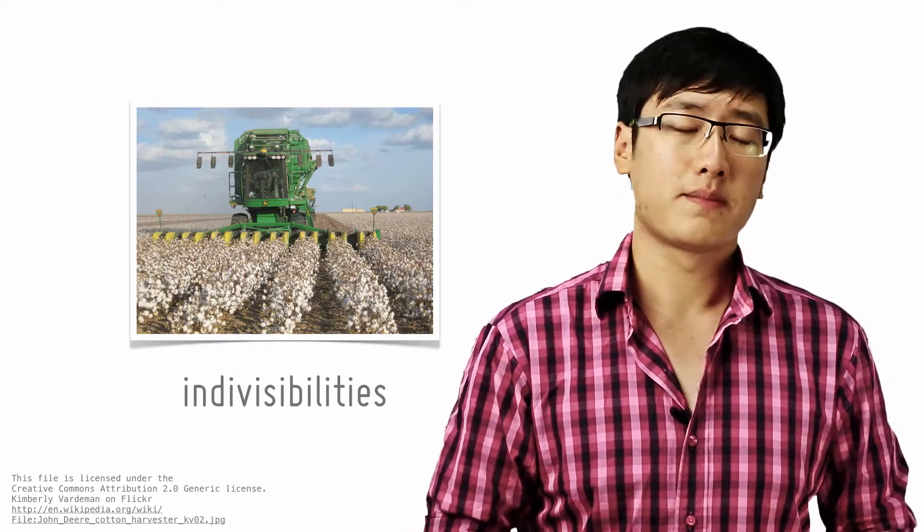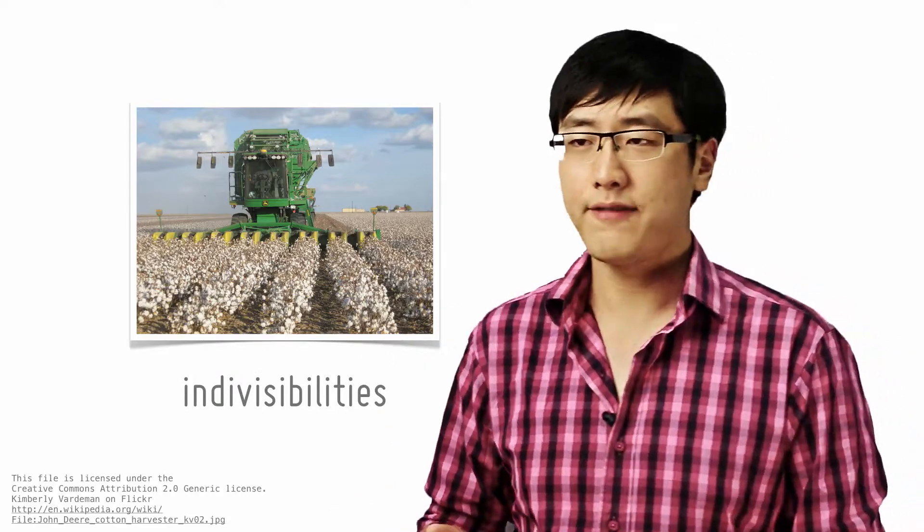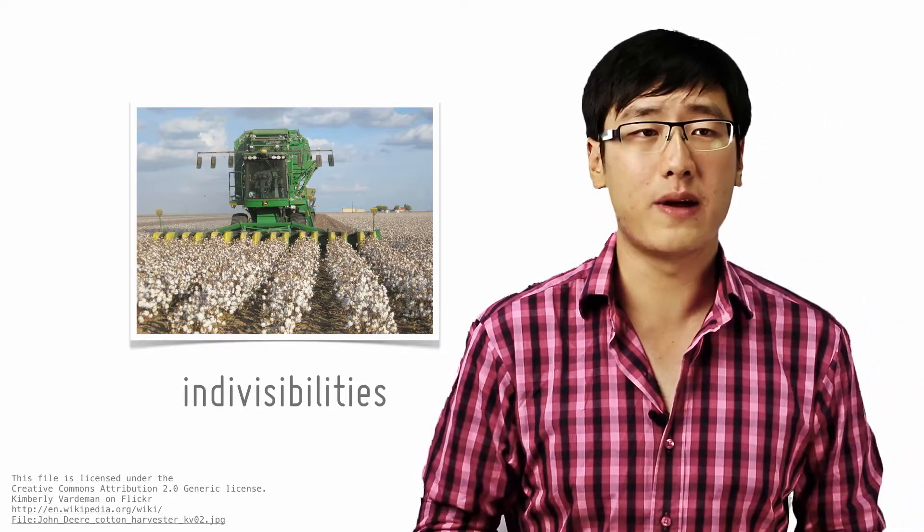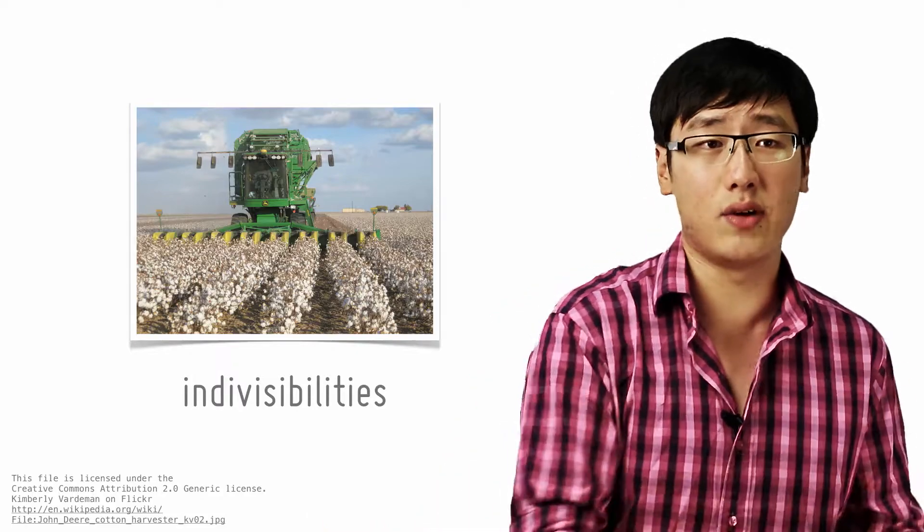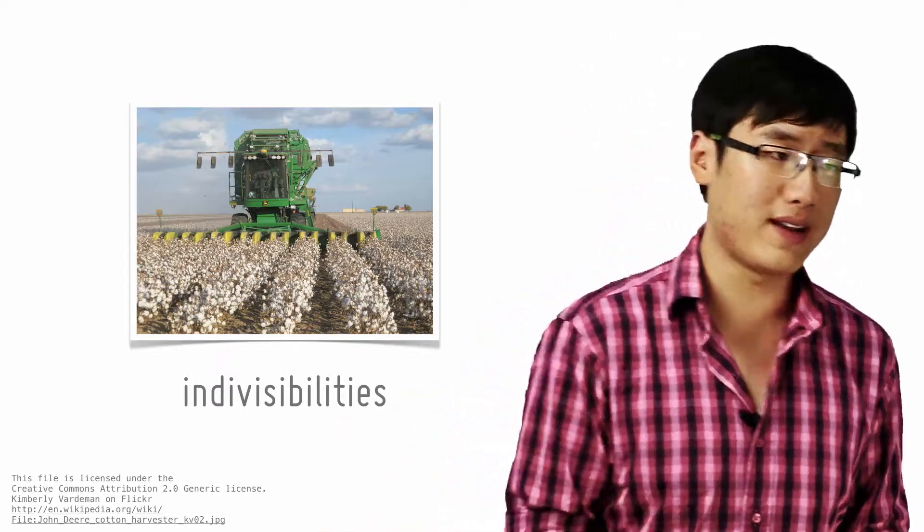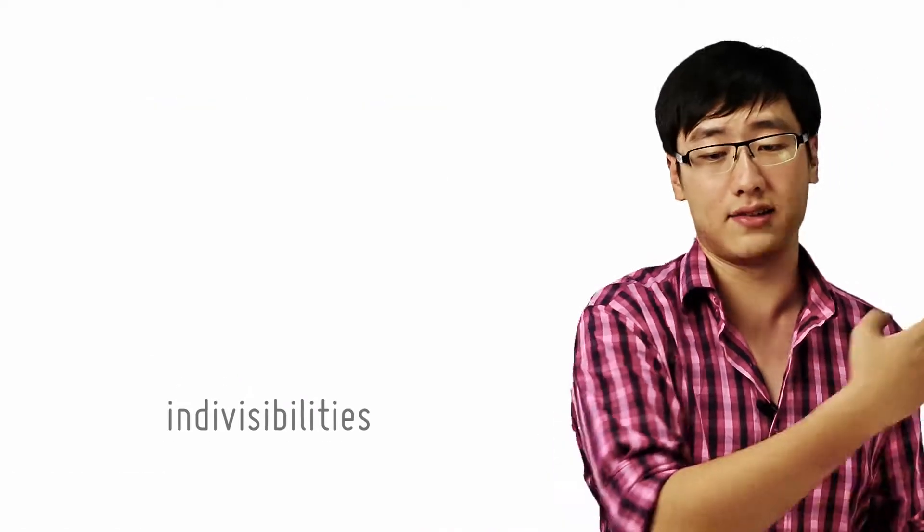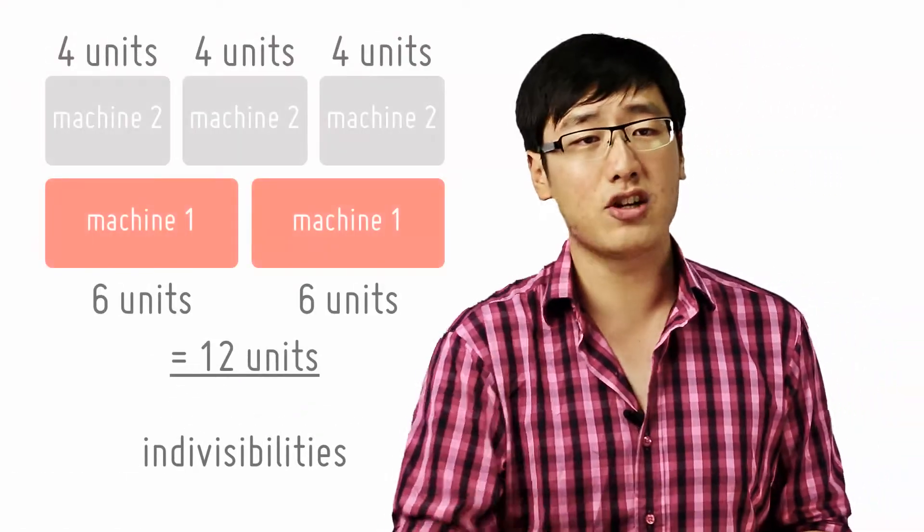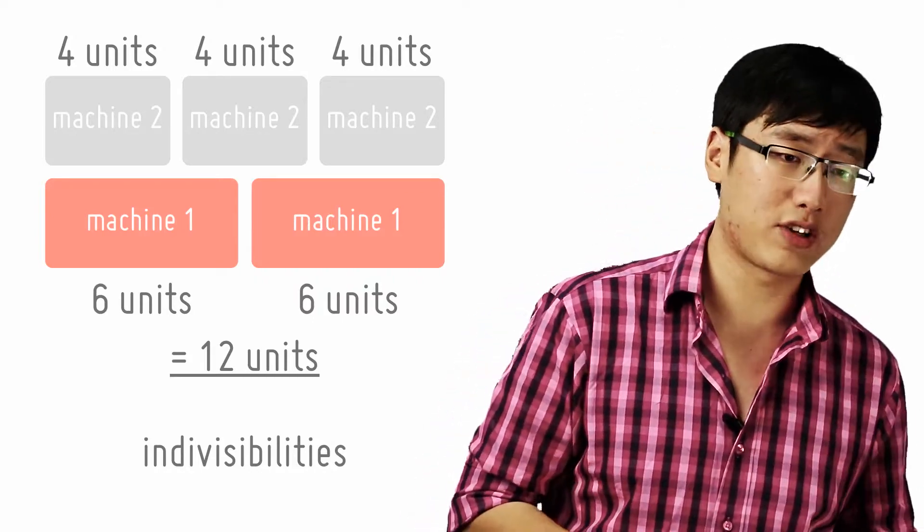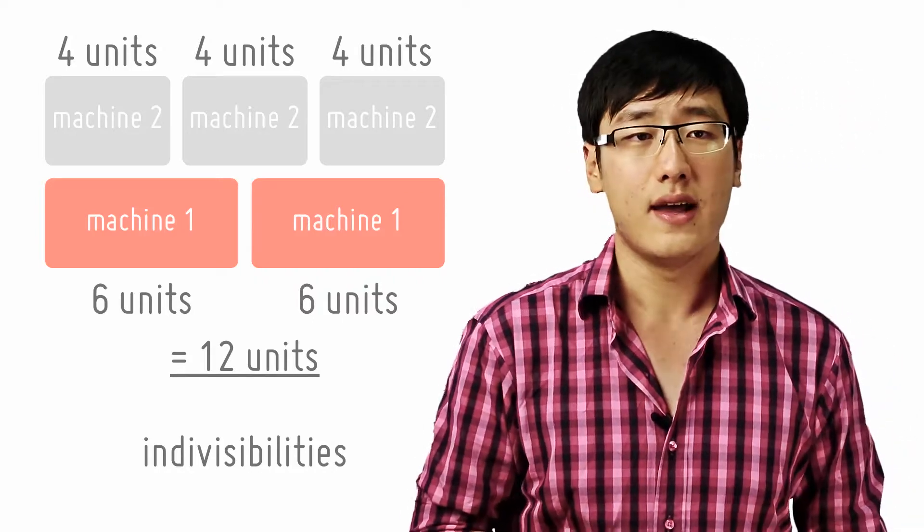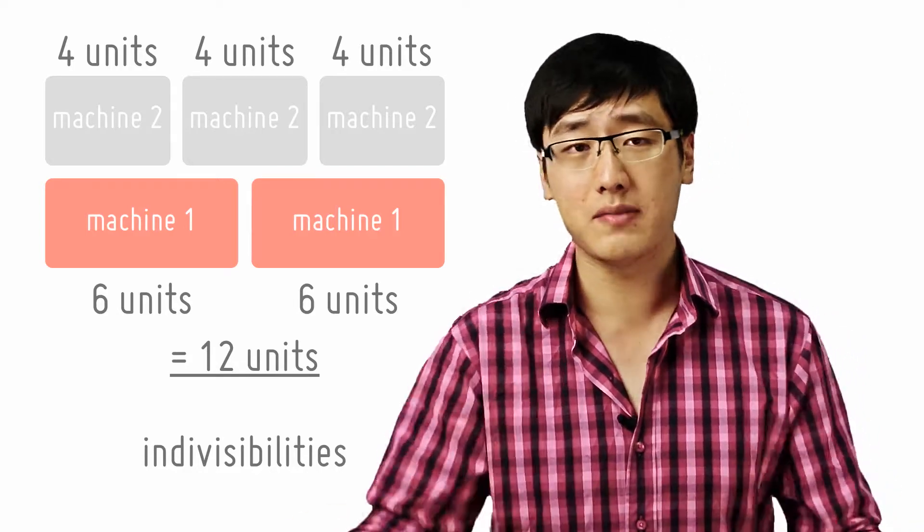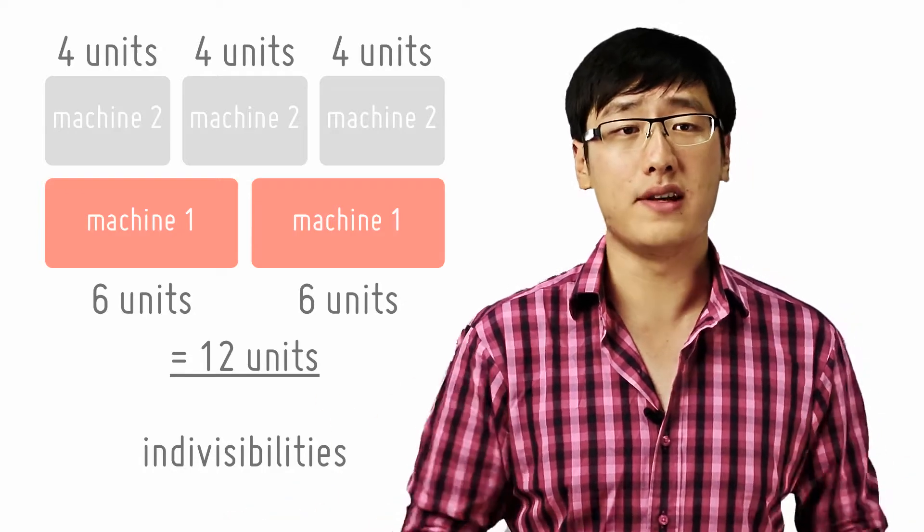The issue with indivisibilities is made worse when you have a production process that needs several different machines. For example, if there are two types of machines, one that produces at six units a day and another that packages at four units a day, you need to produce a minimum of twelve units a day involving two production machines and three packaging machines. Unless you are a large firm with a large customer base, you will not need the entire twelve units.